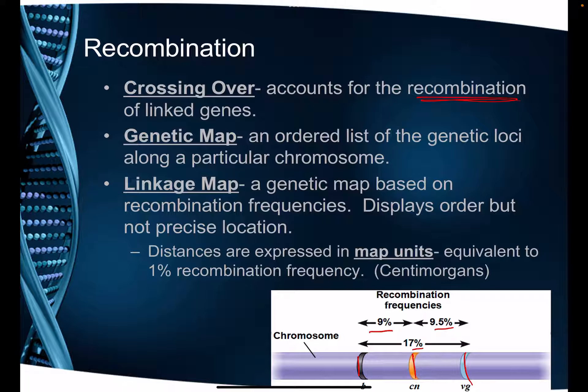These distances are expressed in a unit called map units, sometimes called centimorgans, named after Thomas Hunt Morgan. One map unit or one centimorgan is equivalent to a 1% recombination rate. So if vg and cn crossed over 9.5% of the time, we would say there are 9.5 map units between them on the chromosome. It doesn't tell us a precise location along the DNA, just relatively how close they are together.